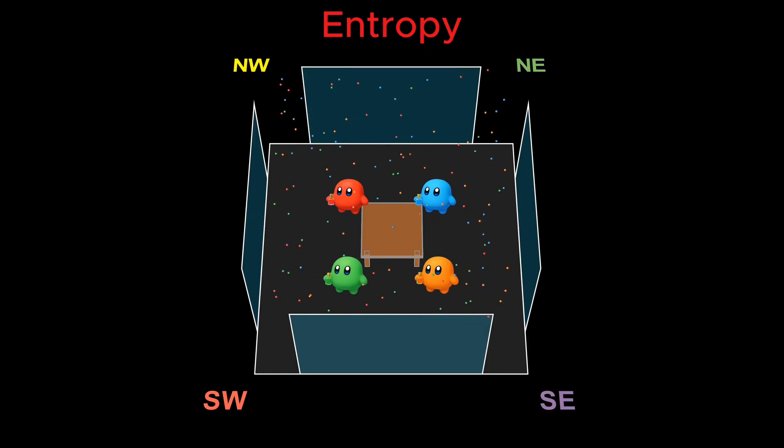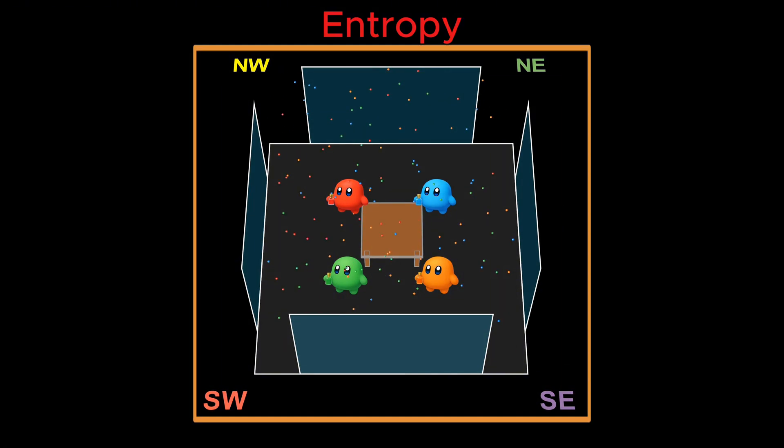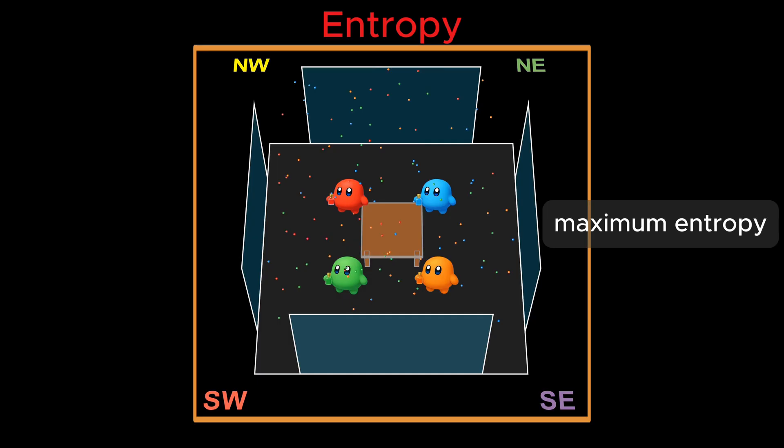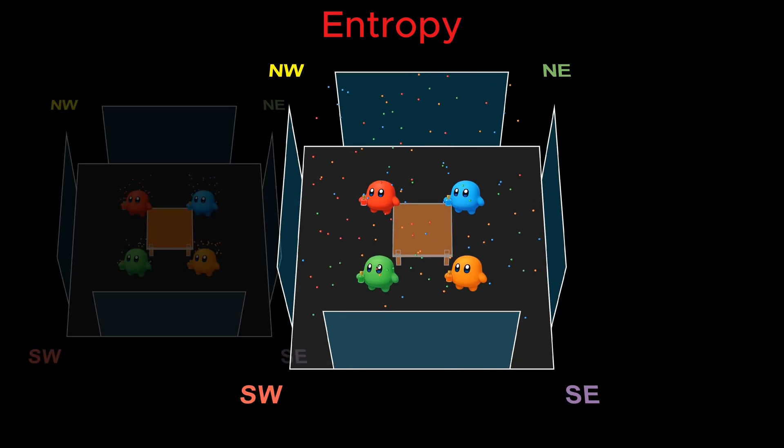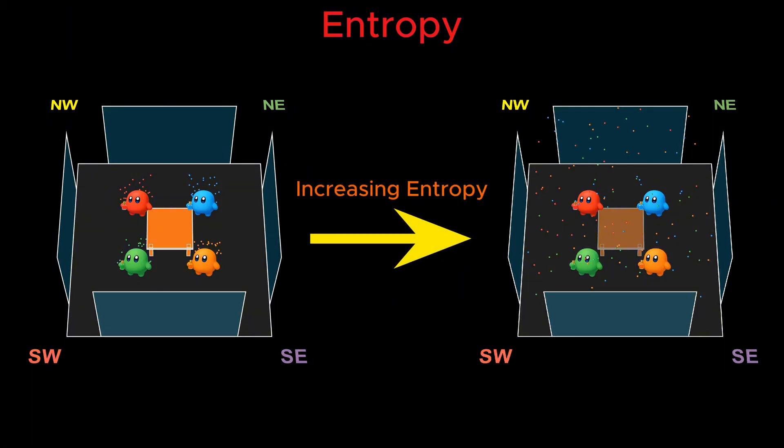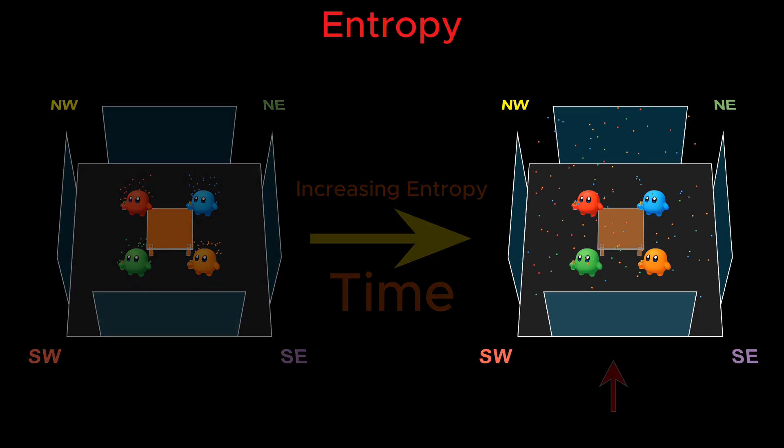Momentary patches might appear due to randomness. But the overall trend is clear. The colors blend. The information about the corners fades. And the distribution becomes uniform. In a closed room with no preferred direction, the most probable macrostate is the well-mixed one, which corresponds to the greatest number of microstates. That's maximum entropy. The direction of increasing entropy gives us an arrow of time. We go from a special, low-entropy state toward a typical, high-entropy state.